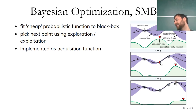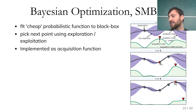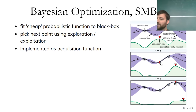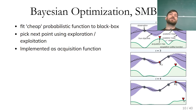The algorithm iterates: it evaluates the expensive function at the proposed point, retrains the surrogate, updates the uncertainty, optimizes the new acquisition function, and proposes the next point. We get a better and better model of the underlying function with our surrogate and converge closer to the optimum. We're trading off optimizing the expensive dotted-line function versus optimizing the cheap acquisition function, which is usually a Gaussian process — a probabilistic regression model — that we can optimize using gradient-based methods or random search, which is much faster than training a neural network.